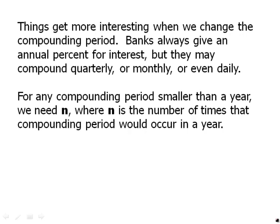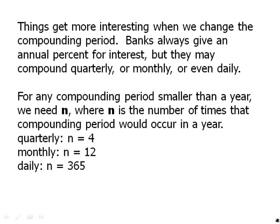For example, quarterly means N equals 4 — we're compounding 4 times a year. Monthly is N equals 12 — compounding 12 times a year. Daily is 365 — we're compounding 365 times a year.